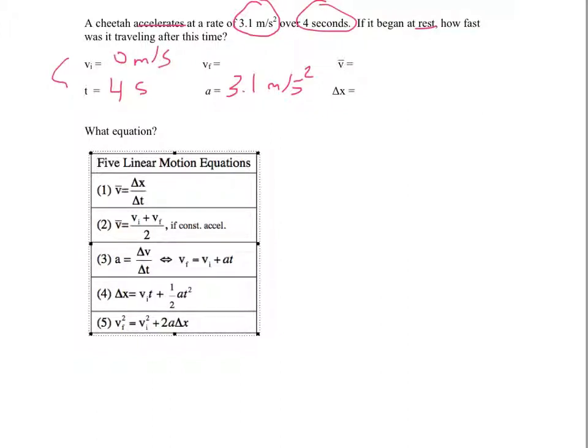And it says how fast is it traveling after this time, so we're looking for vf. No information is given about the average velocity or the displacement. That's okay, we don't have to worry about those, we can ignore those. We're just looking for vf.